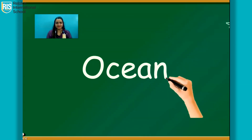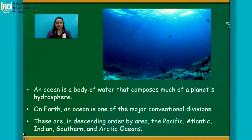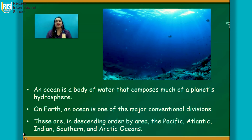Ocean. An ocean is the body of water that composes much of the planet's hydrosphere. On Earth, an ocean is one of the major conventional divisions. These are, in descending order by area: the Pacific Ocean, the Atlantic Ocean, the Indian Ocean, the Southern Ocean, and the Arctic Ocean.